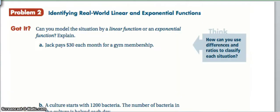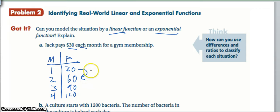Now we want to look at real-world situations and identify whether the real-world situation is linear or exponential. If Jack is paying $30 each month for a gym membership, we could look at this by saying the number of months and the total that he has paid. After 1 month he's paid 30. After 2 months, he's paid 60 total. After 3 months, he's paid 90. After 4 months, he's paid 120. We can see that this is a consistent change of plus 30 all the way through. So it is a linear relationship.